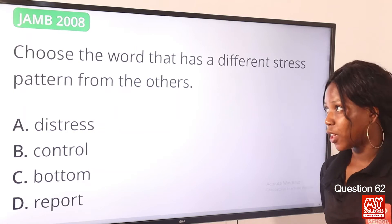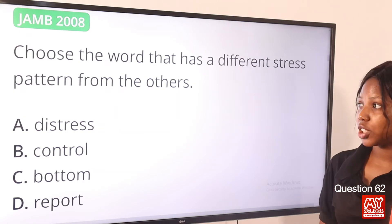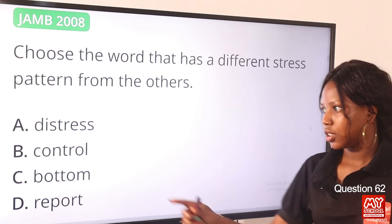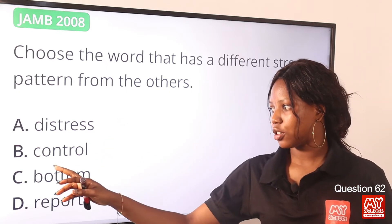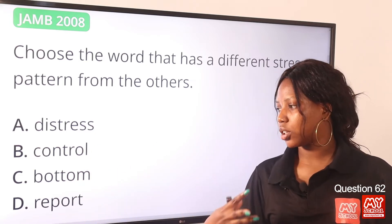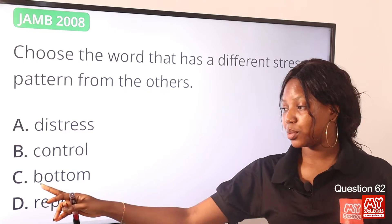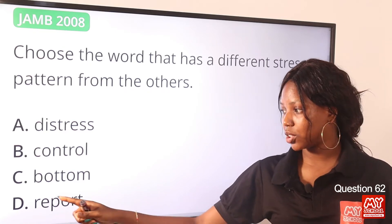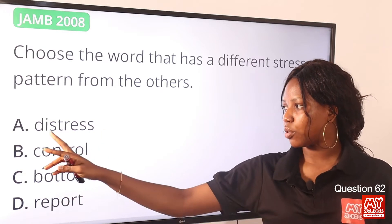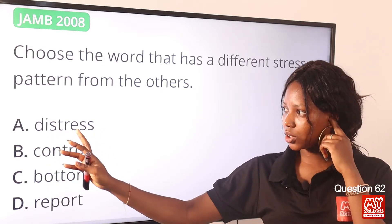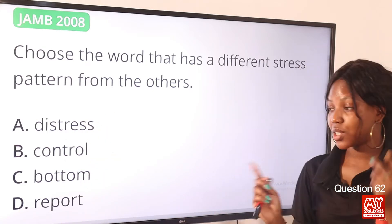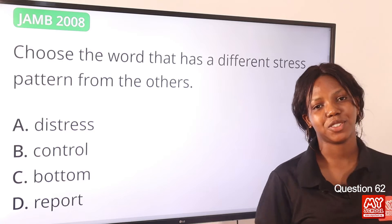Question 62. Choose the word that has a different stress pattern from the others. Option A: distress. Option B: control. Option C: bottom. Option D: report. From my pronunciation, option C is the correct answer because 'bottom' is stressed on the first syllable, but the rest — distress, control, report — are stressed on the second syllable. So option C is the correct answer.